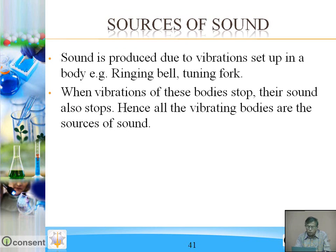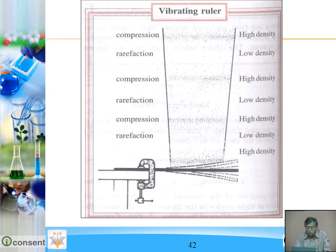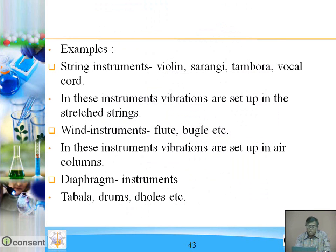Sound is produced due to vibrations set up in a body. For example, a ringing bell or tuning fork. When vibrations of these bodies stop, their sound also stops. Hence all vibrating bodies are the source of sound. Compressions and rarefactions are produced. Examples of string instruments: violin, sarangi, tambora, vocal chord — vibrations are set up in the stretched strings.